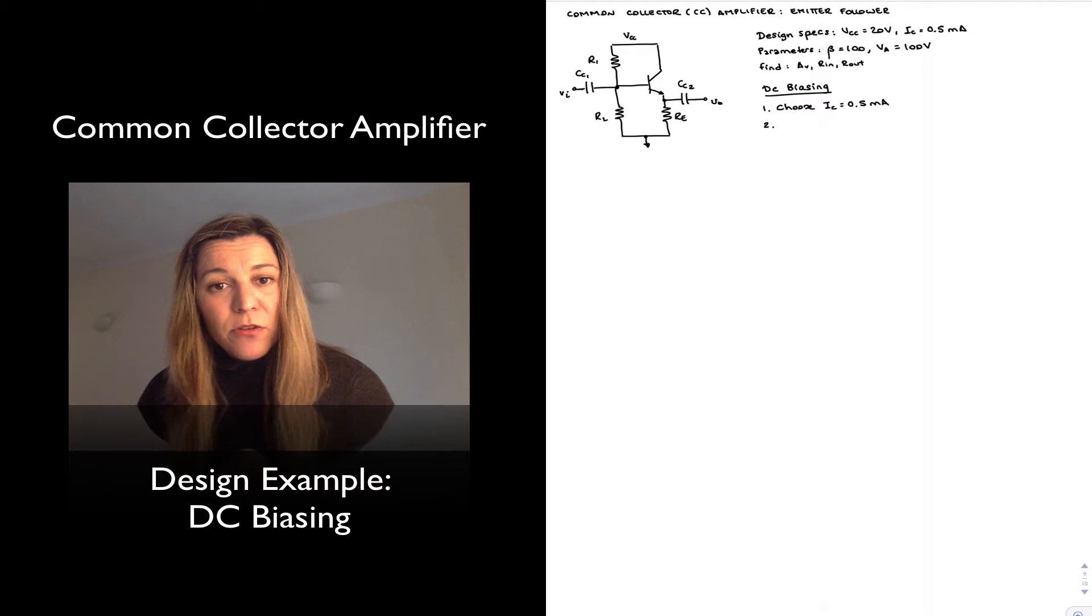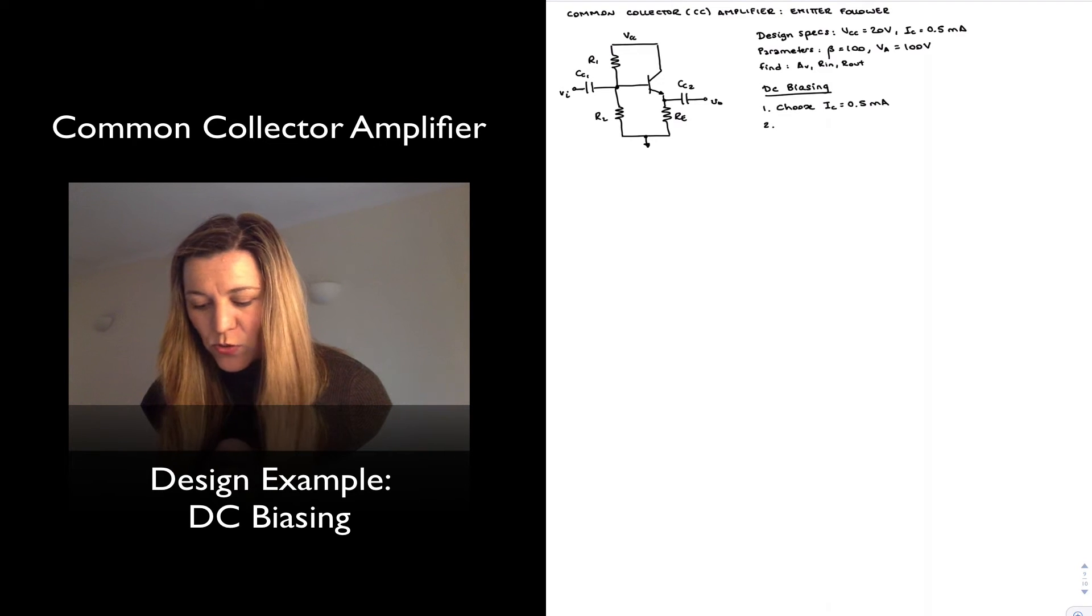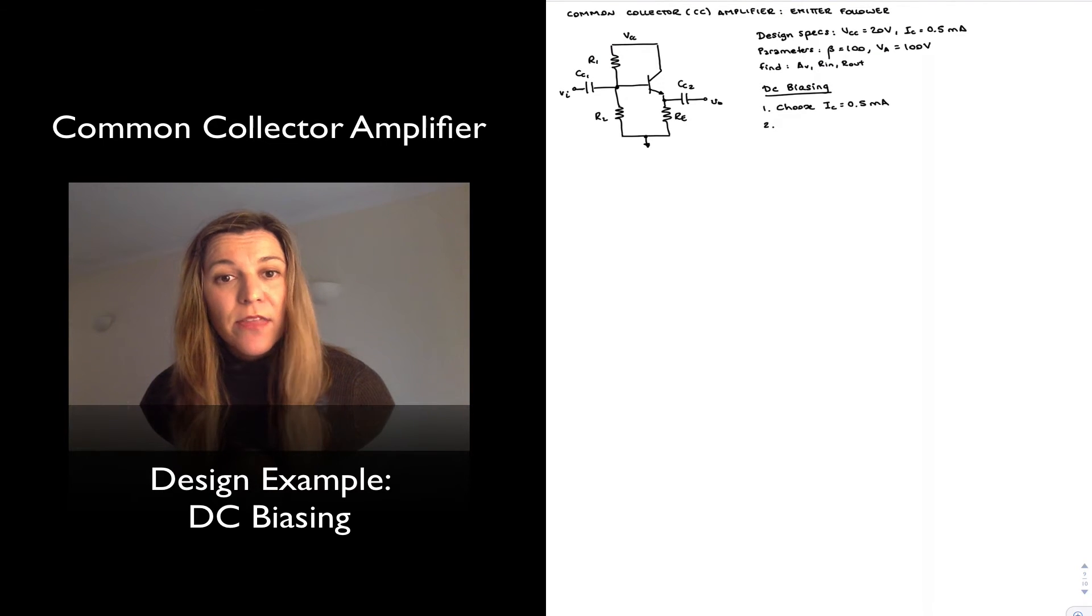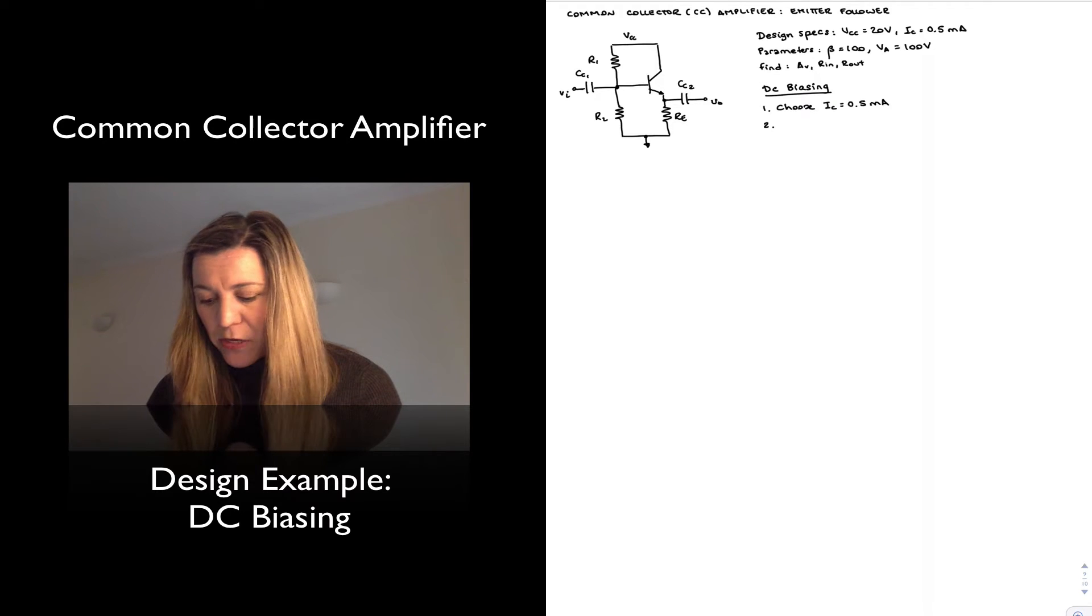Then I need to select my emitter resistance, and I want to select it in a way so that I will center the output voltage. Remember, the output voltage is now taken at the emitter terminal. So for maximum output voltage swing, it will be best if I center that voltage at the emitter.